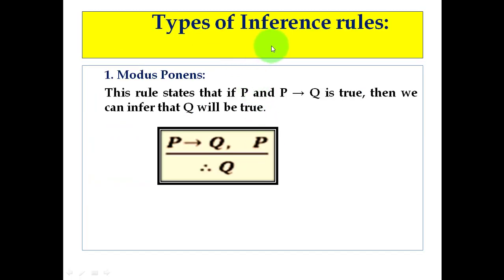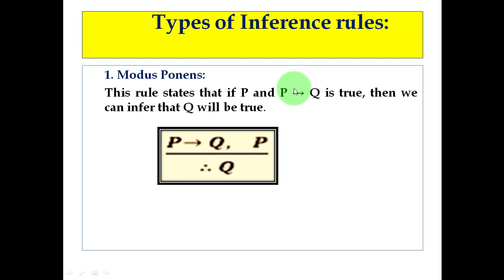Now, types of inference rules. The first one is modus ponens, and this is very important — you will find modus ponens in competitive examinations where the standard is high. Modus ponens states that if P and P implies Q is true, then we can infer that Q will also be true. It is written as: P implies Q, comma P, divided by therefore Q.